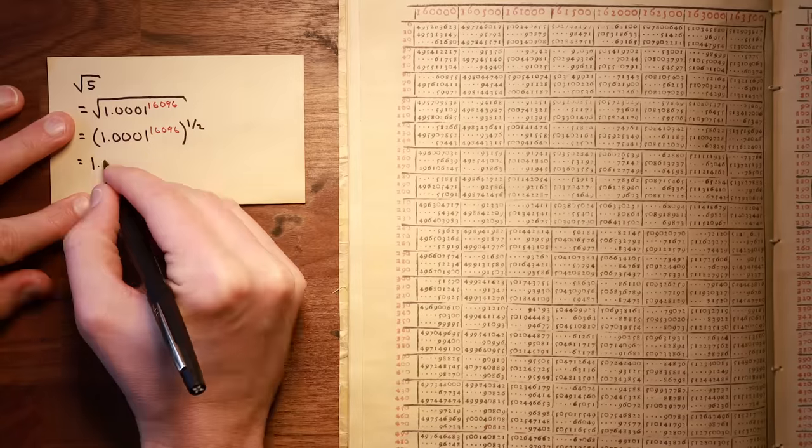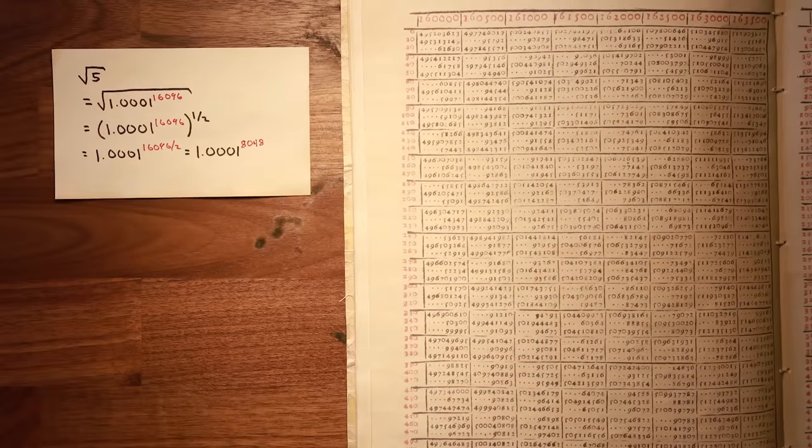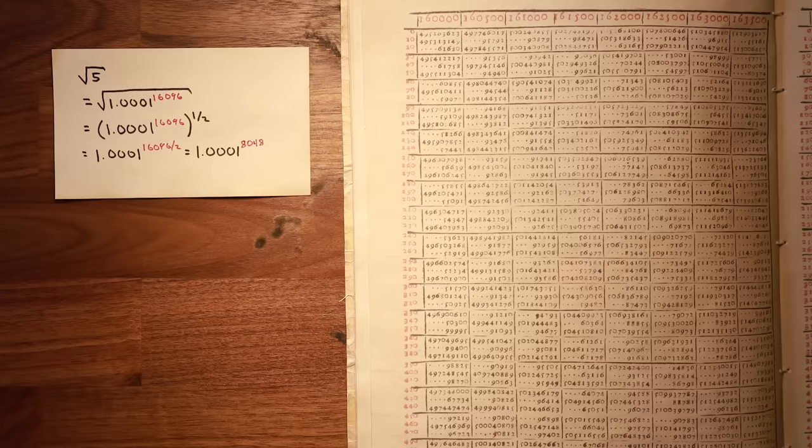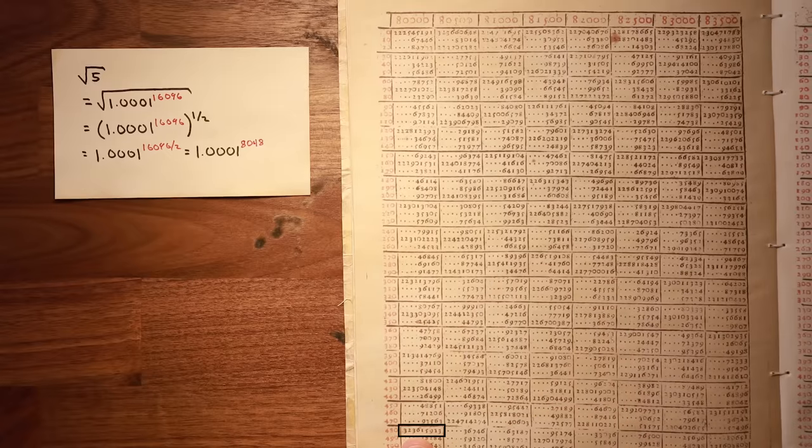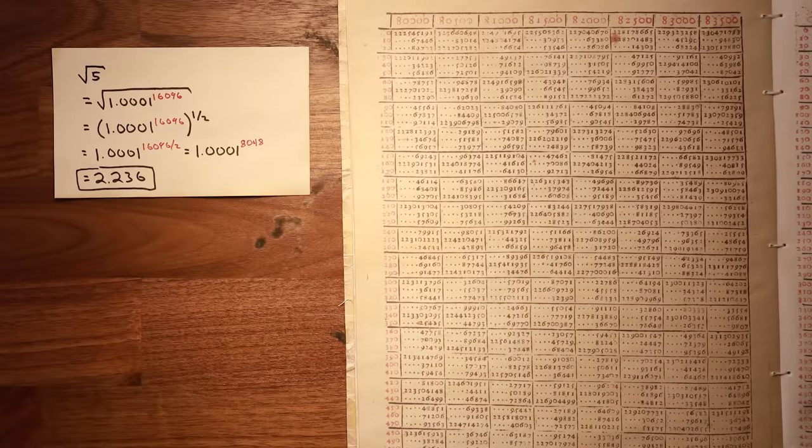Rewriting our square root as a one-half power, we can simplify our expression to 1.0001 to the power of 8048. Taking 8048 as our new red number, we can look up this value in our table to get our new black number and final answer of 2.236.